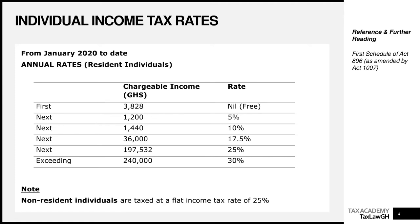Unlike non-resident individuals who have a flat income tax rate of 25%, if you are a resident person we take your income through different layers to tax you. We start from 0% — the nil or free tax band — which is an annual income of 3,828 Ghana Cedis. If that is all you earn for the whole year, you don't pay tax. This is usually computed with reference to the national daily minimum wage on an annualized basis. It goes all the way up to 30% if you earn more than 240,000 Ghana Cedis for the whole year. This is the tax rate we use to compute income tax for resident individuals.